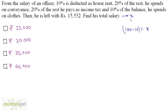Of this amount, after deducting the house rent, 20% is again deducted and that is spent on conveyance. So what is left is (100 - 20)% of the amount left over. This amount remains after deducting both house rent and conveyance.